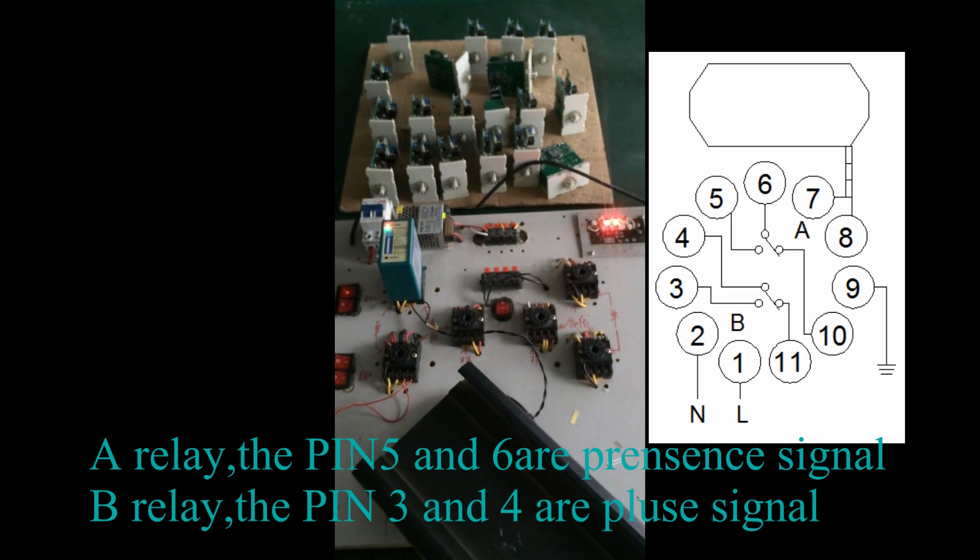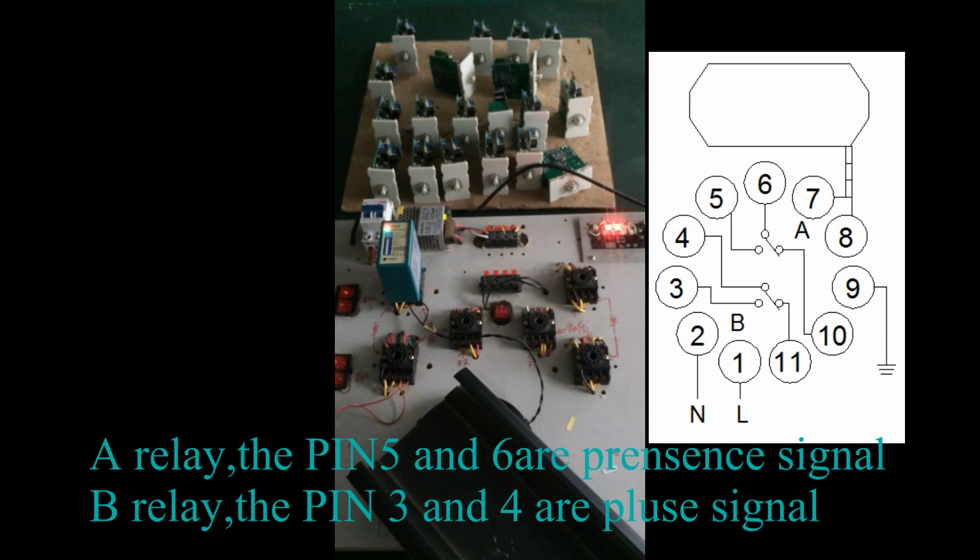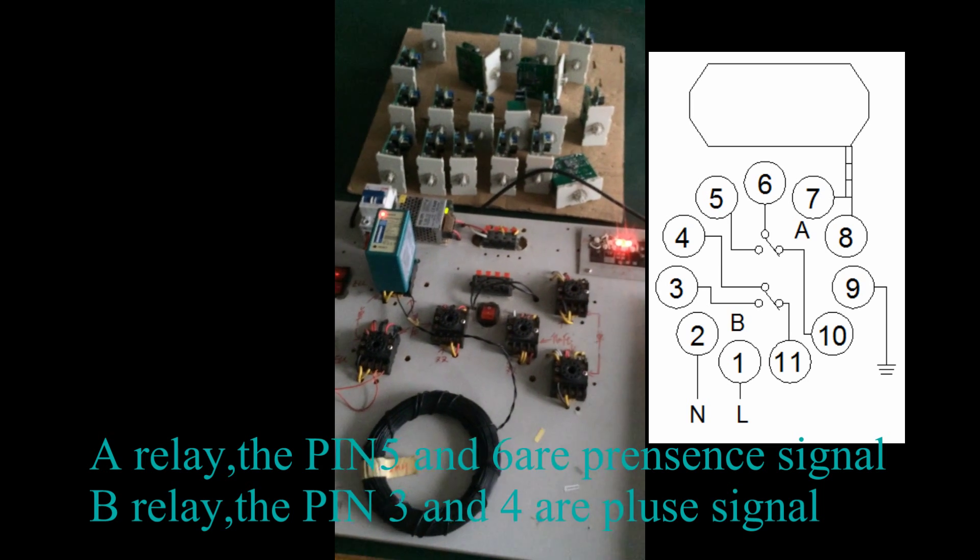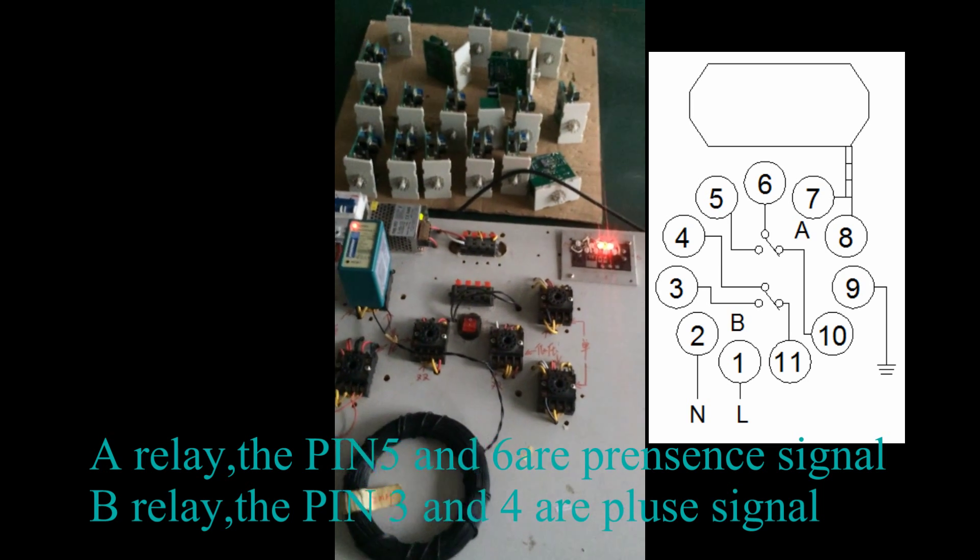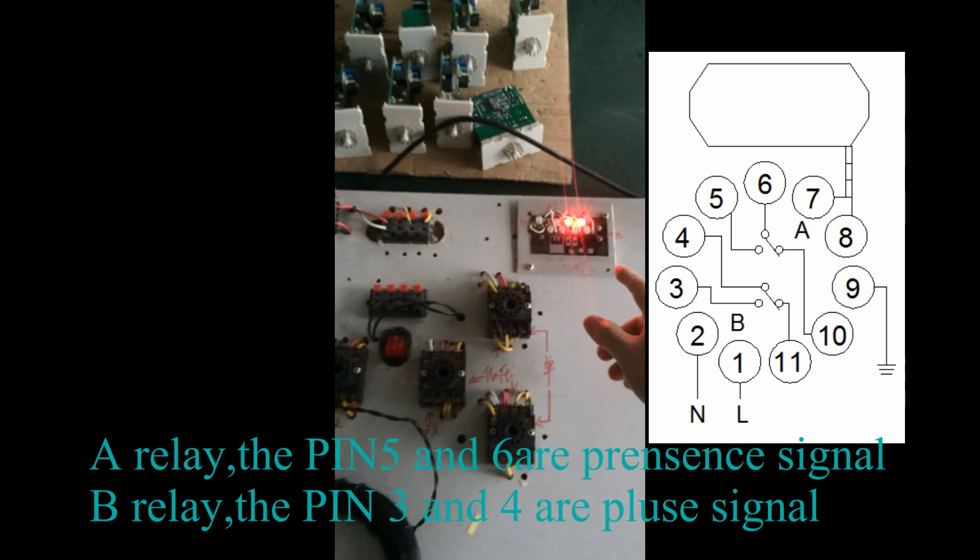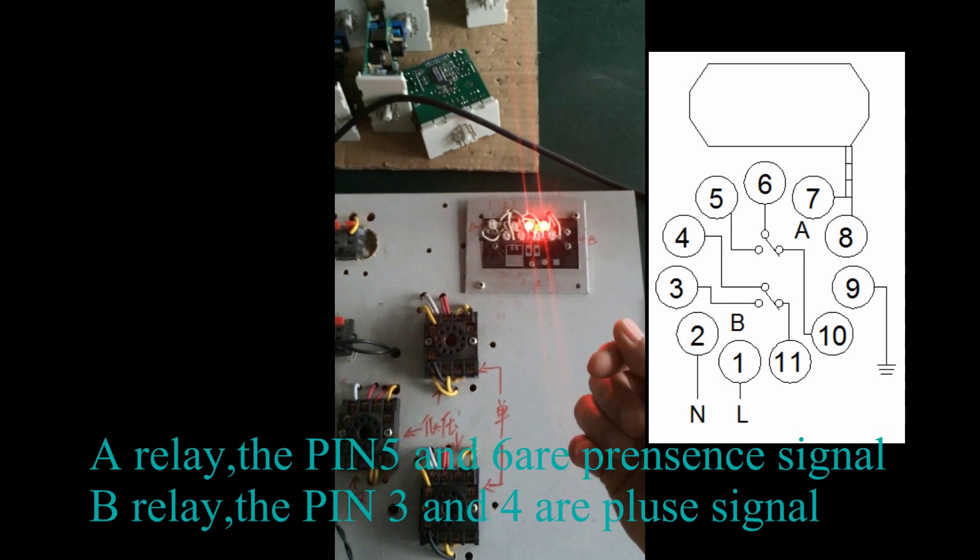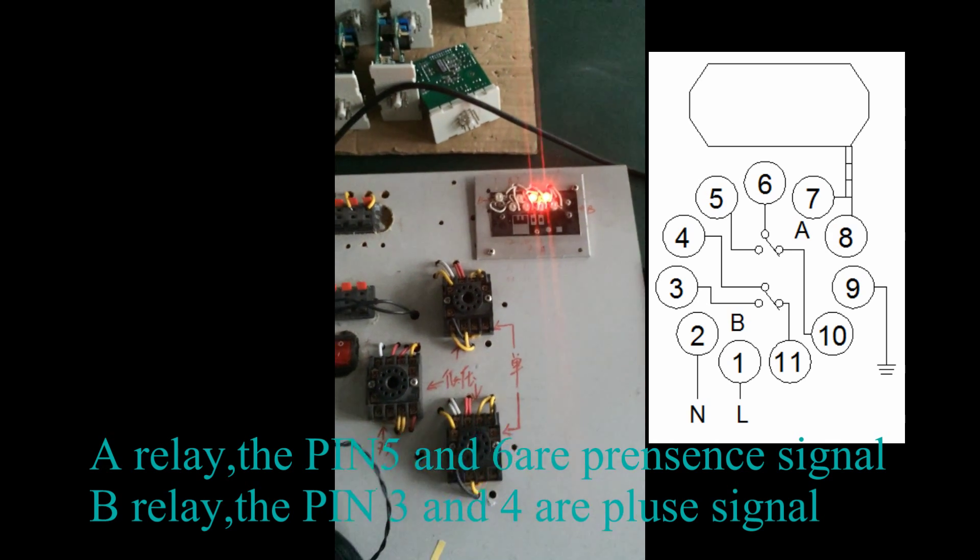The presence signal is for the traffic barrier control. It protects the arm, the barrier arm, to prevent it from hitting the car.